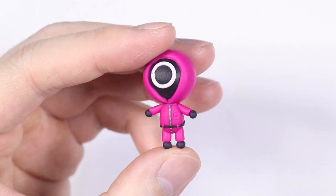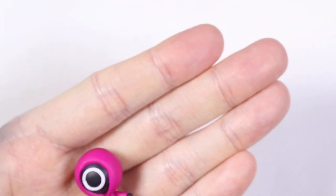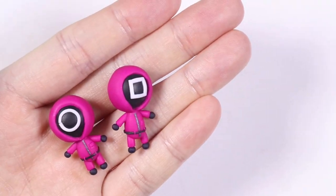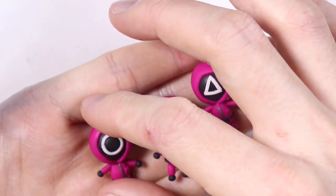And once it's all baked, here is the final product. We have the one with the little O mask, the little square ones, and then the triangle ones as well. I hope you guys enjoyed this video and thank you for watching!